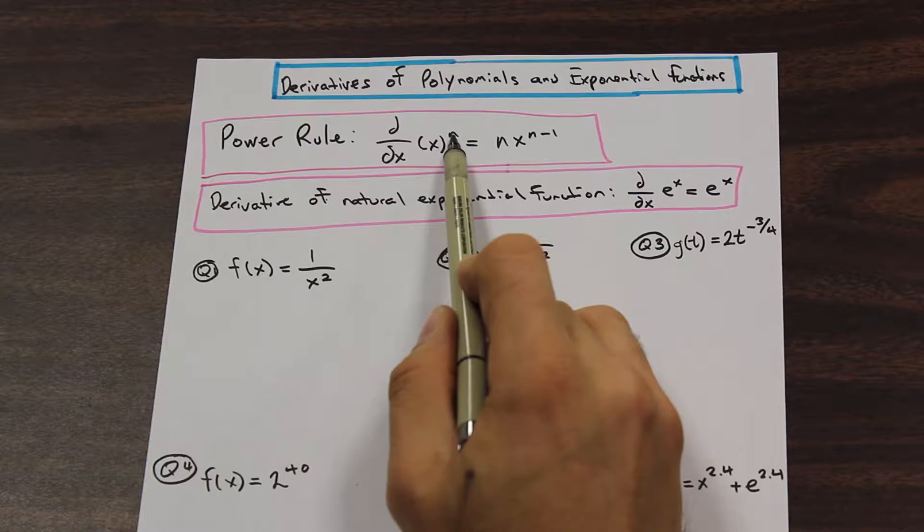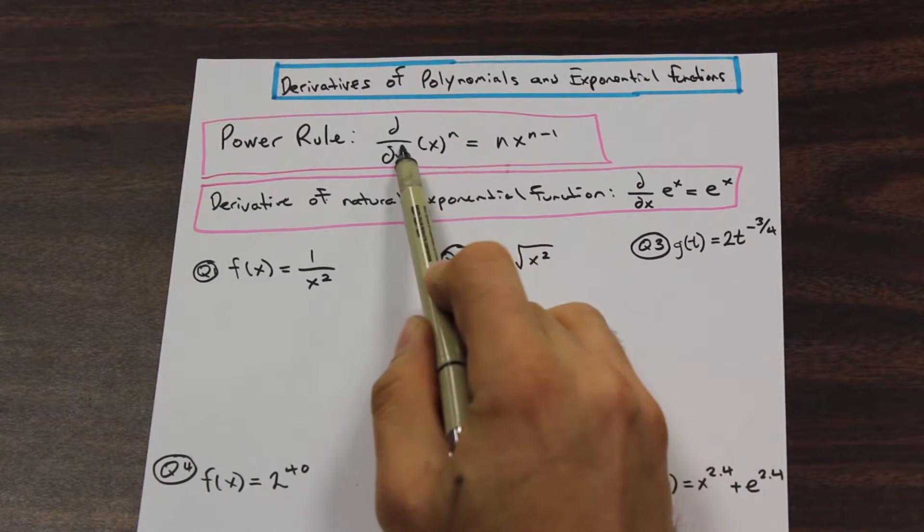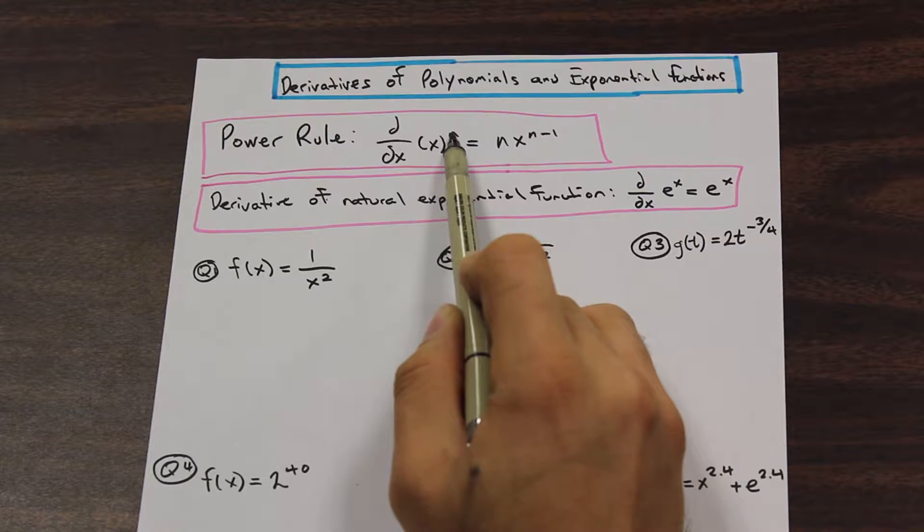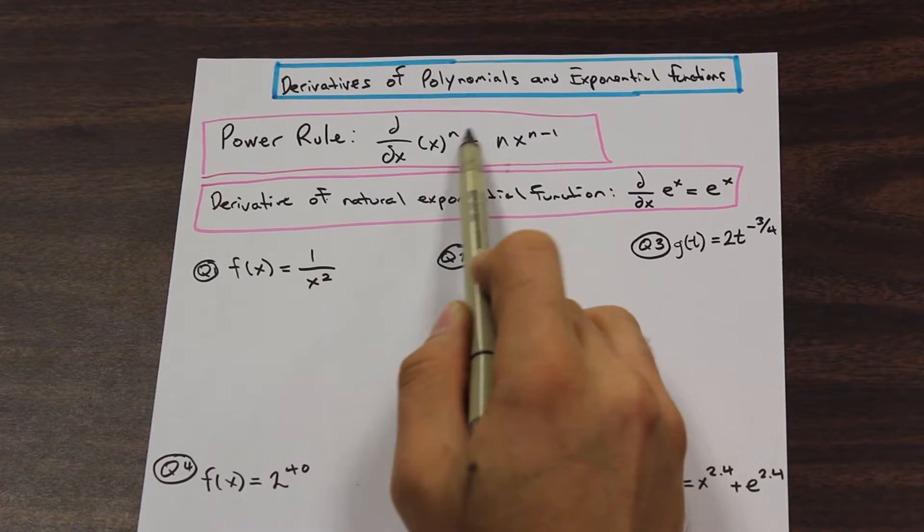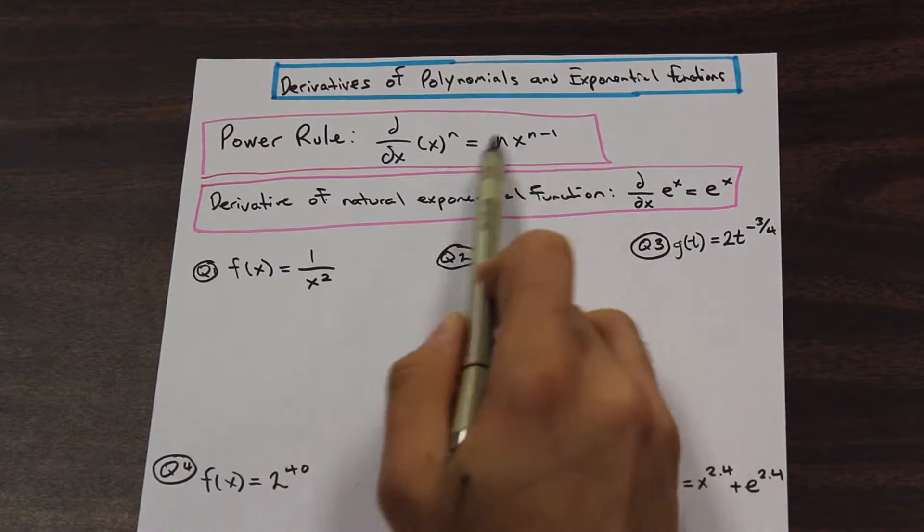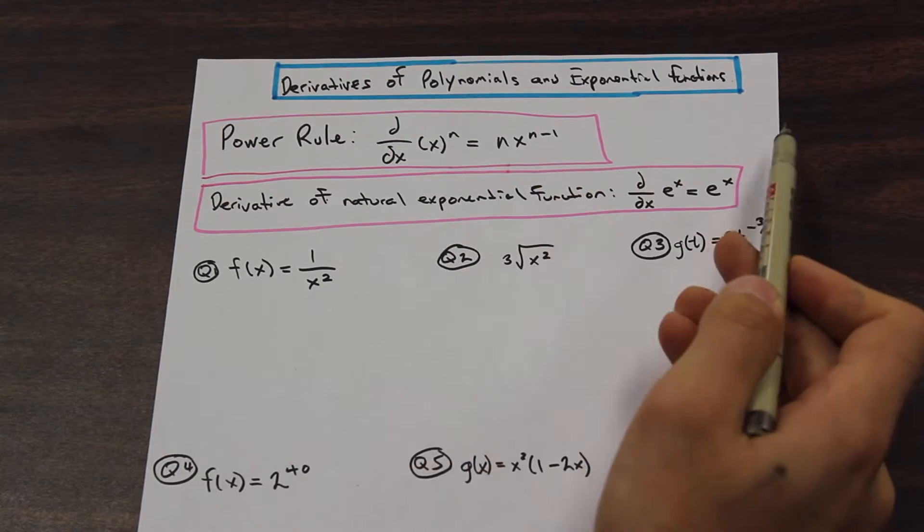All we're going to do is we're going to take this power and we're going to move it down in front. So we're going to multiply x by whatever n is. And then after we do that, we're going to subtract one from n and that's going to be the derivative. It's as simple as that. So the formula is going to be n times x to the n minus one.